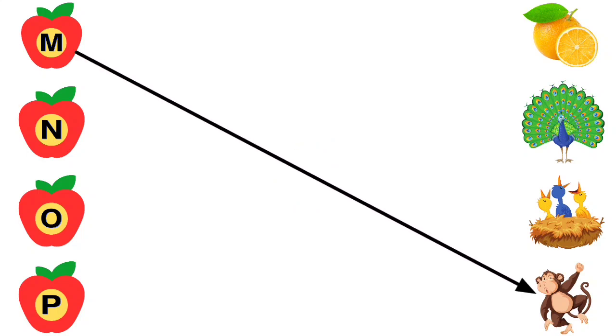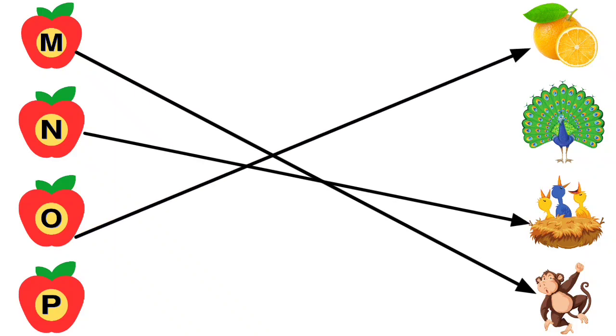M for Monkey, N for Nest, O for Orange, P for Peacock.